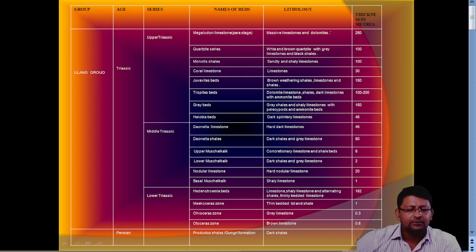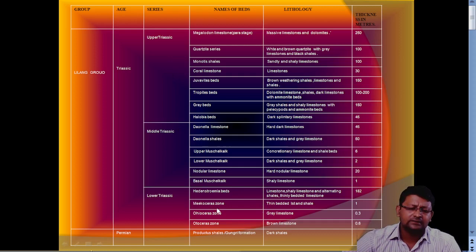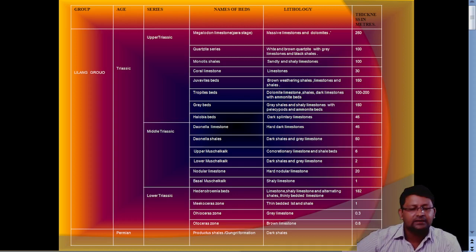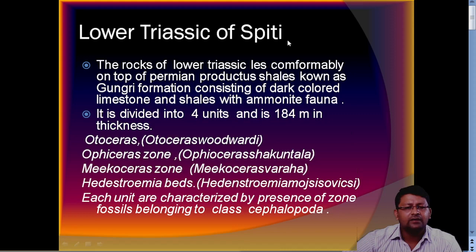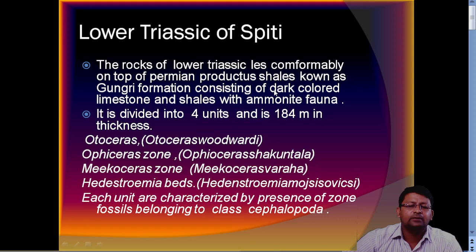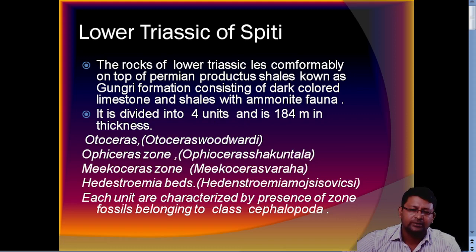Overall you have to go through this succession covering lower Triassic, middle Triassic, and upper Triassic. All the names of these beds and formations are derived from their characteristic features. This dark limestone, also known as Gangari Formation, has abundant ammonoid fauna. It is divided into four units and the total thickness is 184 meters.